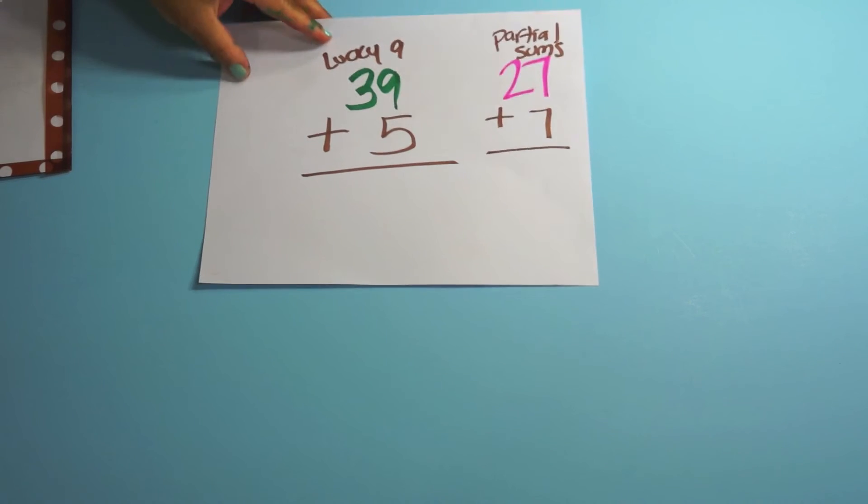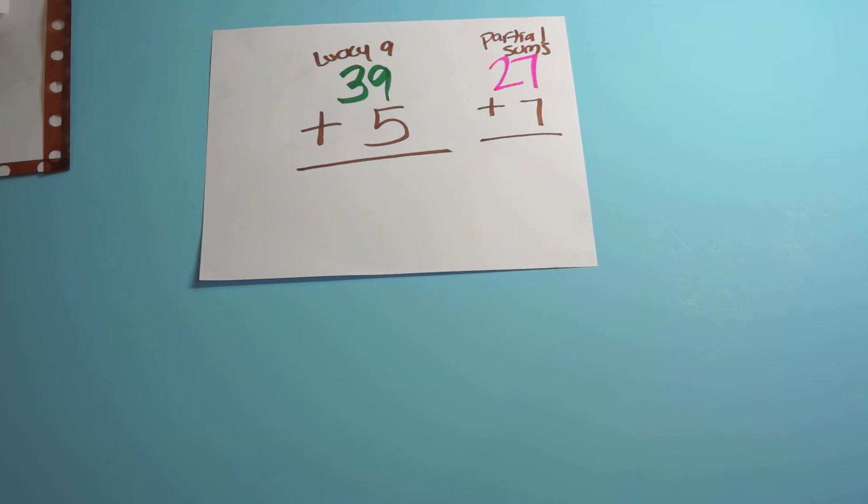So adding through 100. You're going to show kids things like this and they don't have, they have to regroup but only double digit by single digit and they're really regrouping using some of those strategies that they learned as part of their basic facts.